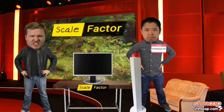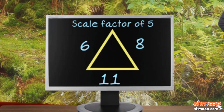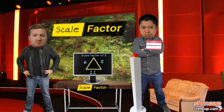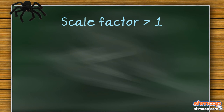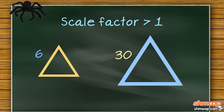Okay, contestant number two, we're giving you a triangle with side lengths of 6, 8, and 11, and a Scale Factor of 5. What's your new shape look like? Oh, that's a shame. Dilly-dallying cost you there. When we have a Scale Factor of over 1, you simply multiply the dimensions of your shape by that number. So, here you should have gotten a triangle with sides 30, 40, and 55. See, we got that there? That's a big one.